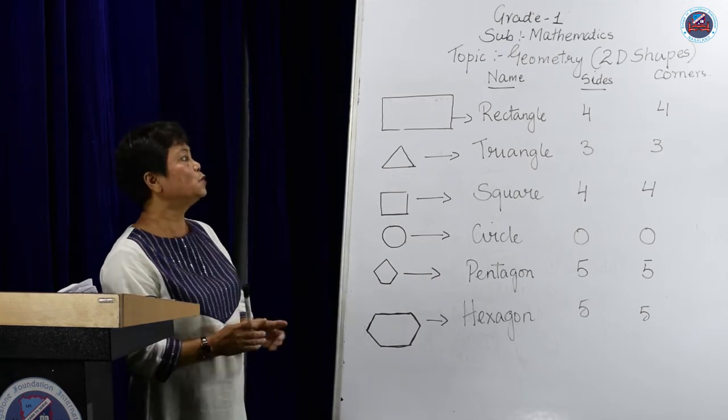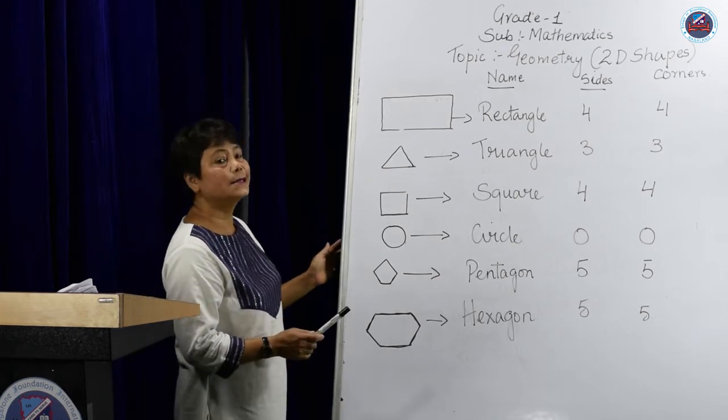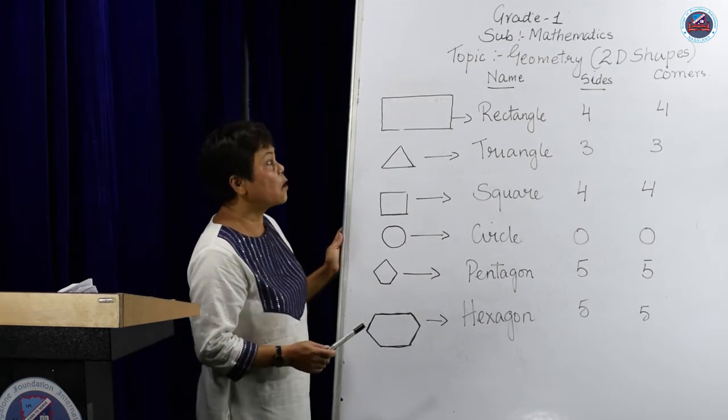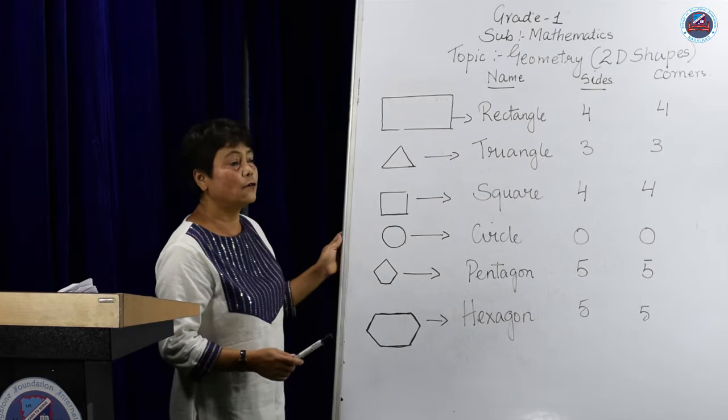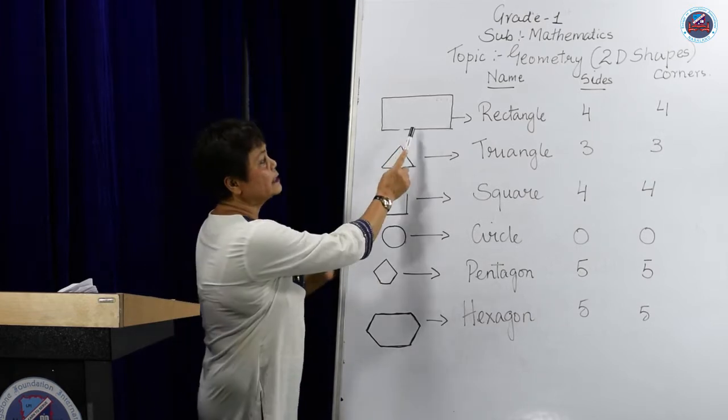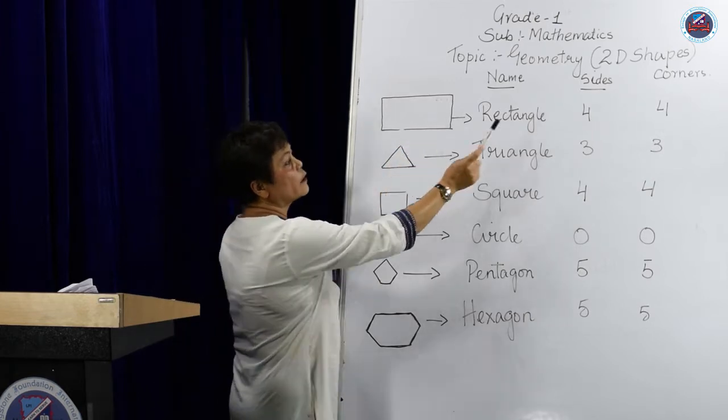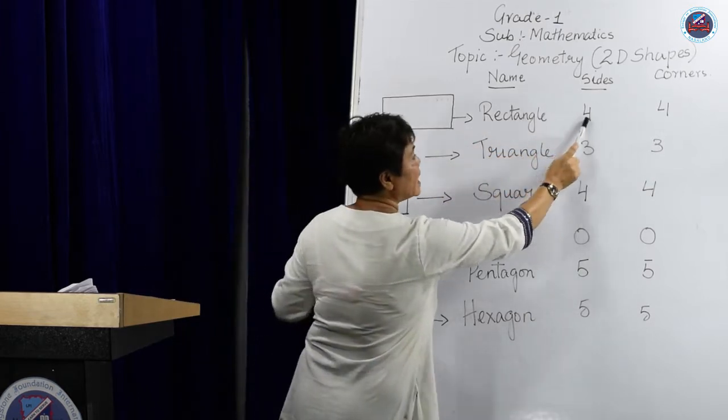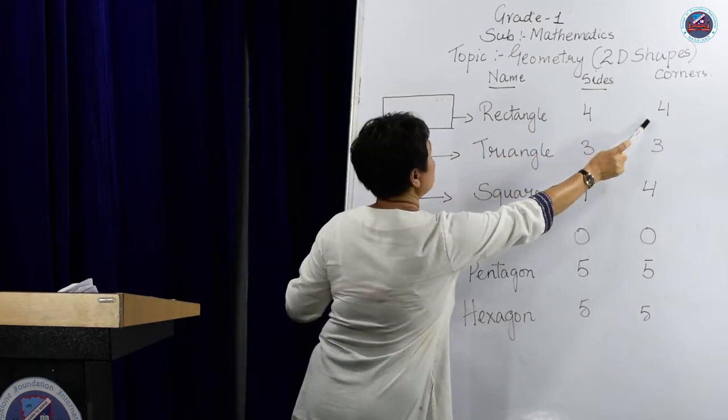Now we are going to see how many sides and corners they have got. A rectangle has got four sides and four corners.